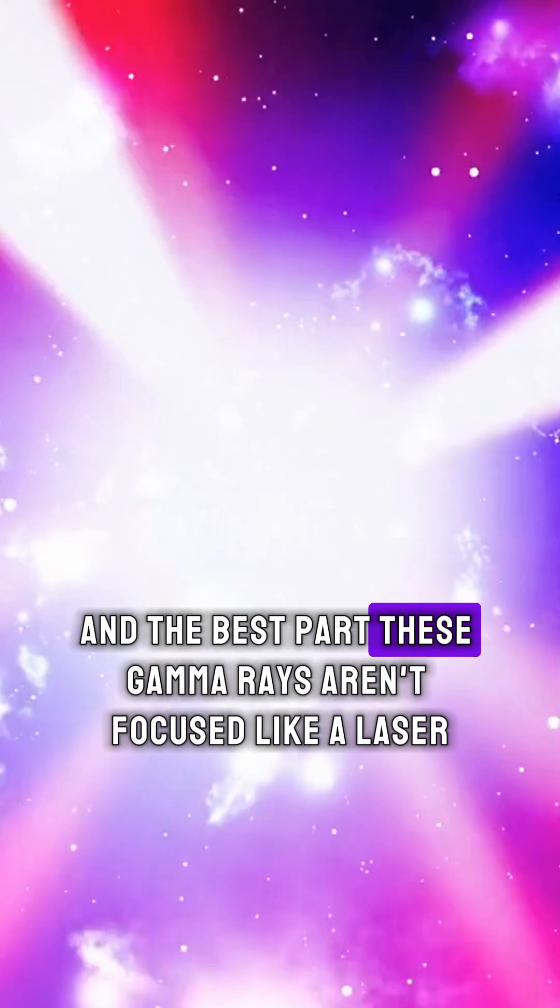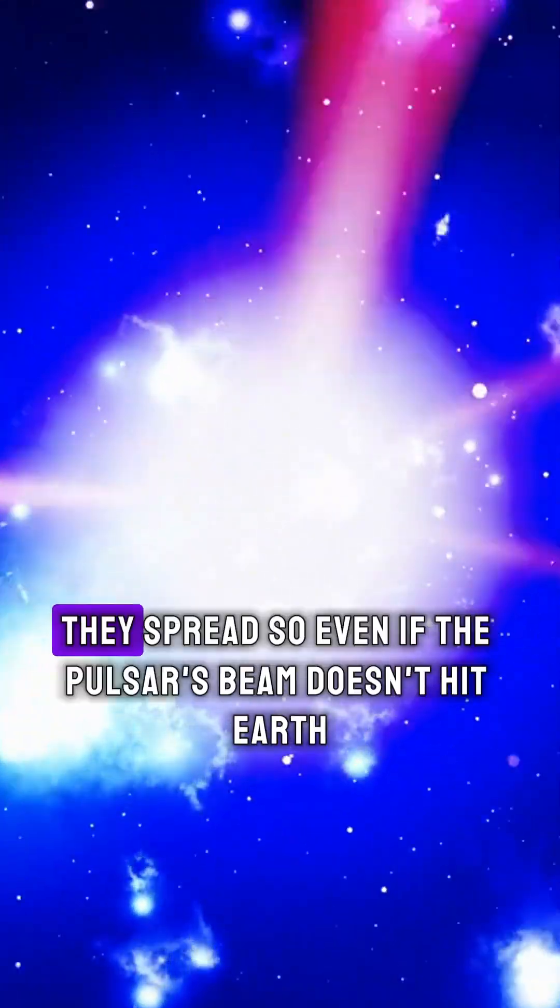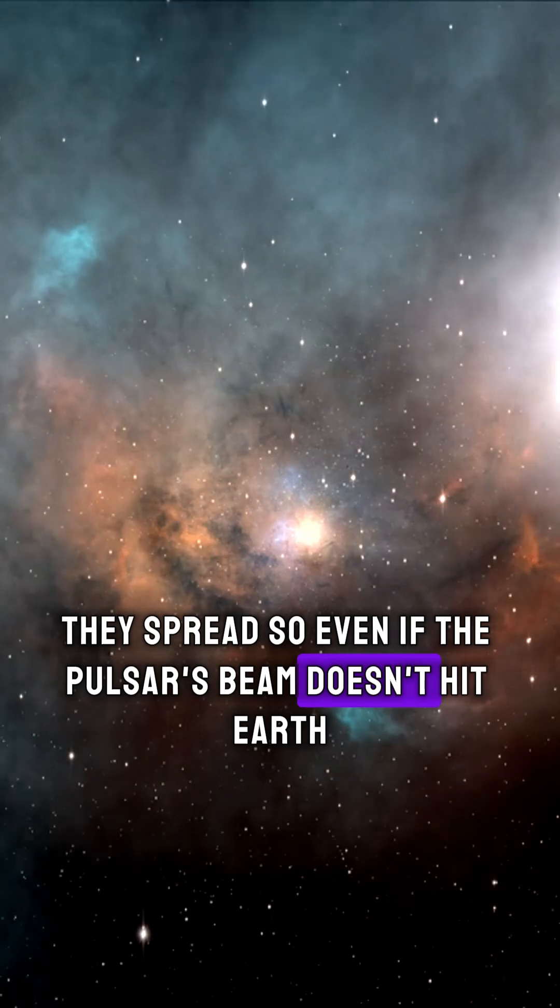And the best part? These gamma rays aren't focused like a laser. They spread, so even if the pulsar's beam doesn't hit Earth, the annihilation photons still can.